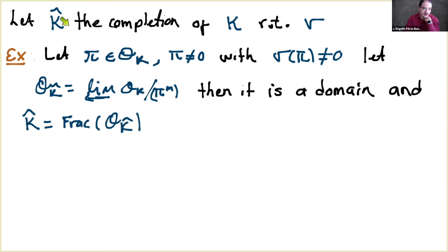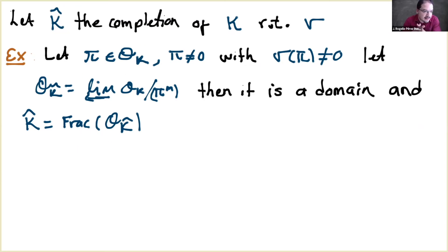The note is that the only p-adic fields whose residue field is finite are exactly the classical p-adic fields — the finite extensions of ℚ_p. When we take the maximal unramified extension of ℚ_p, we get an infinite extension of ℚ_p whose residue field is the algebraic closure of 𝔽_p. This is a complete field — a p-adic field by the modern definition — and this motivates extending the definition.